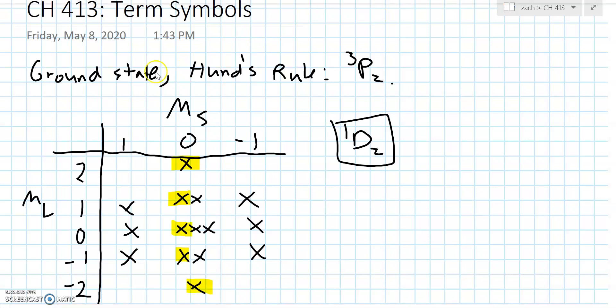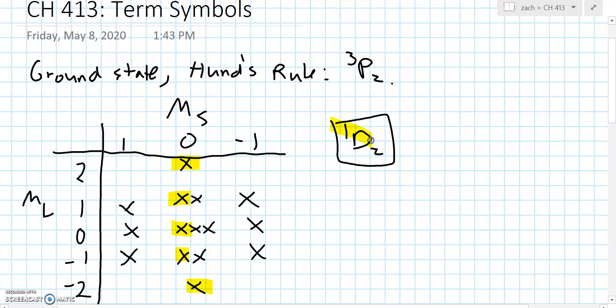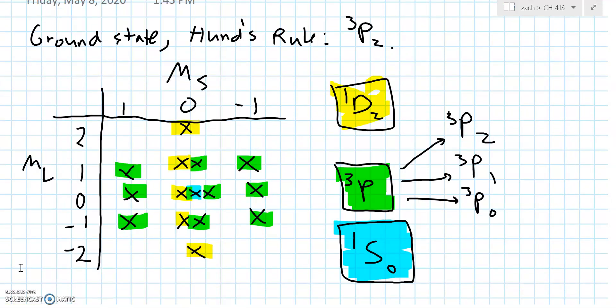I'll go on and highlight that. And what's left then? Then we see that the other possible term symbols are everything in green. We see that this has M sub L value 1, M sub S equal to 1, which forces a triplet P, which splits into 3 different term symbols. And finally, we have our singlet S naught. So I hope you learned something from these examples.